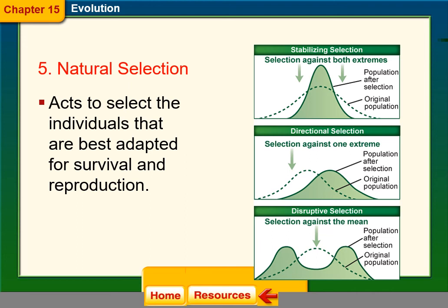Natural selection acts to select individuals that are best adapted for survival and reproduction. There are three different types of selection. Stabilizing selection acts against both extremes, so the middle phenotype increases in frequency and the edges are reduced. Directional selection is when the population shifts toward one side or another.